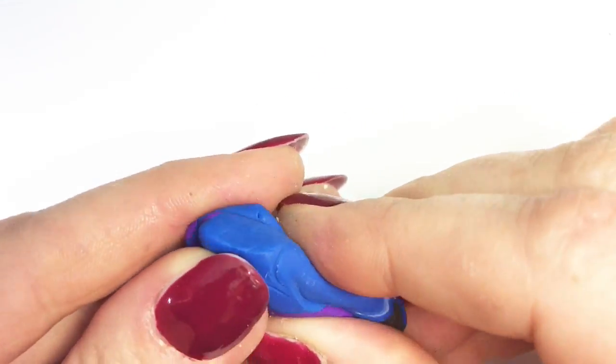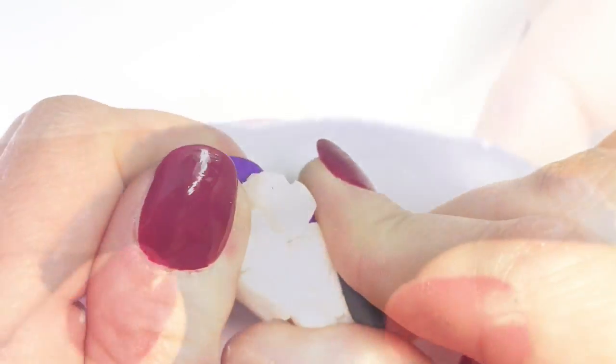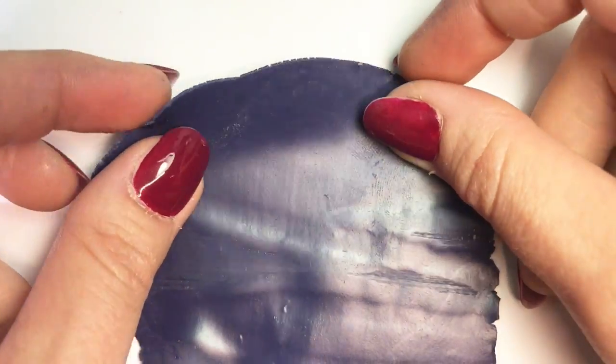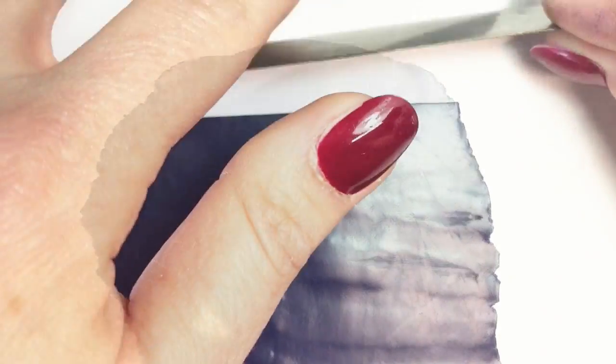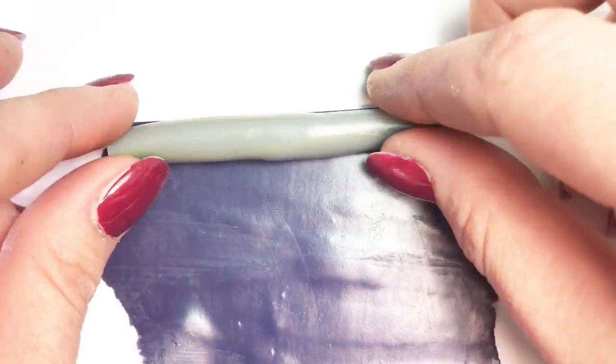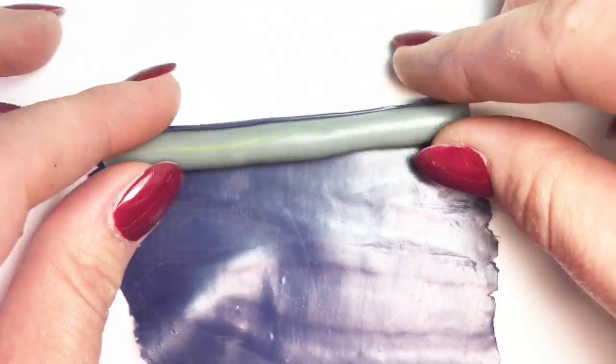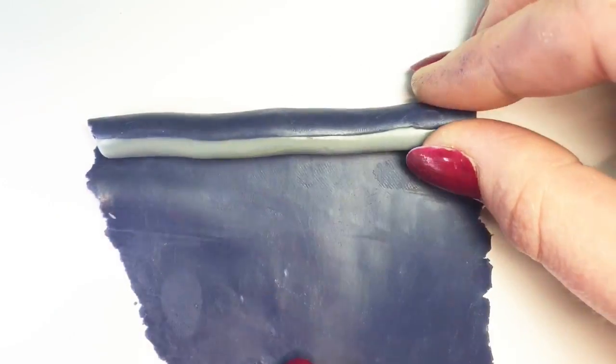To make the skin of the blueberry, I chose mostly translucent, blue, purple, and just a little bit of black. I combined those colors, put them in my pasta machine on the thinnest setting. If you don't have a pasta machine, just use a regular hand roller. And I rolled the skin onto the cane, working the skin thinner as I rolled.